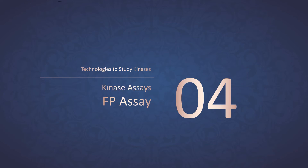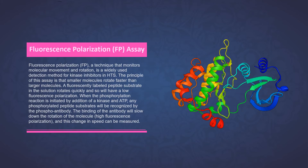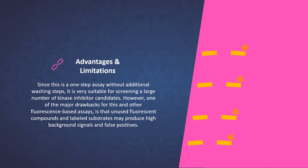Fluorescence polarization, a technique that monitors molecular movement and rotation, is a widely used detection method for kinase inhibitors and high-throughput screening. The principle of this assay is that smaller molecules rotate faster than larger molecules. A fluorescently labeled peptide substrate in solution rotates quickly and so will have a low fluorescence polarization. When the phosphorylation reaction is initiated by addition of a kinase and ATP, any phosphorylated peptide substrate will be recognized by the phosphoantibody. The binding of the antibody will slow down the rotation of the molecule, resulting in high fluorescence polarization, and this change in speed can be measured. Since this is a one-step assay without additional washing steps, it is very suitable for screening a large number of kinase inhibitor candidates.